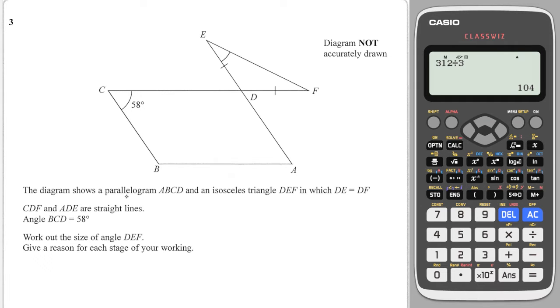We have here a parallelogram and an isosceles triangle. For a parallelogram, opposite angles will be equal and also adjacent angles will add to 180. So I would do 180 minus 58 equals 122. So that would be 122.